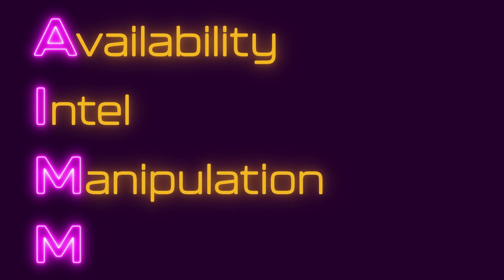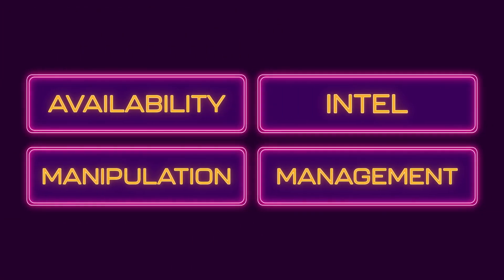In this video and the previous videos, we have taken a deep dive into APIs — what they are, how they work, and most importantly, how to properly secure your APIs when designing and developing them. To recap, let's take a look again at AIM. AIM stands for availability, Intel, manipulation, and management. These four categories are critical to breaking down your API security and leveling up your security one level at a time.